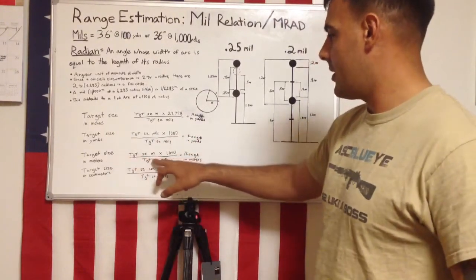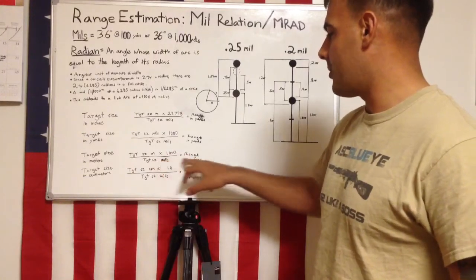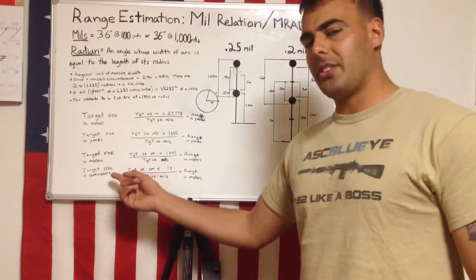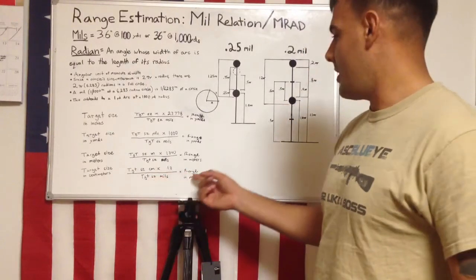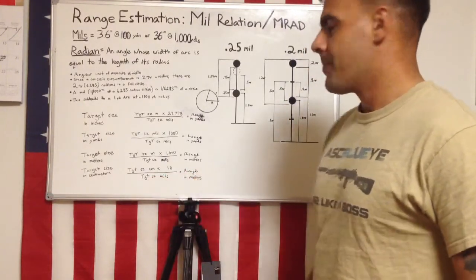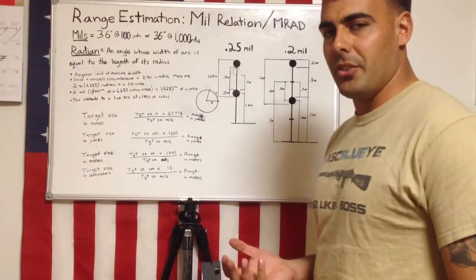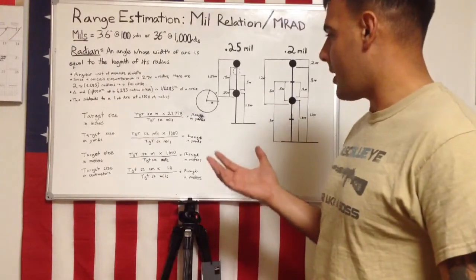Target size in meters, times 1,000, divided by mills, range in meters. And target size in centimeters, times 10, divided by mills, equals range in meters. So those are a few different ways you can range estimate with mills.